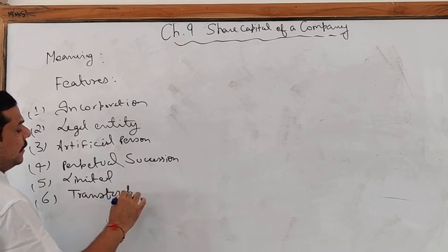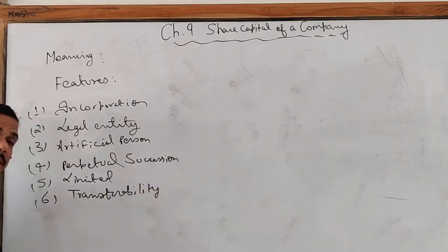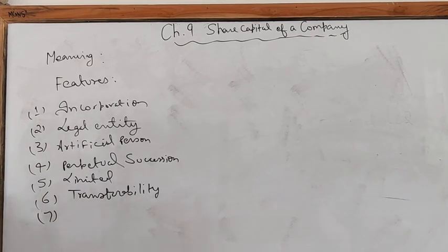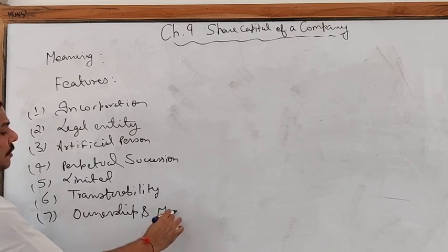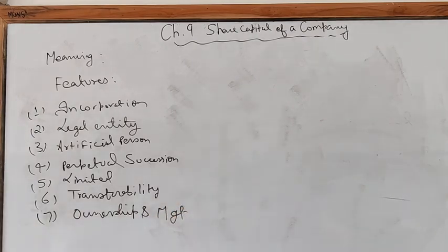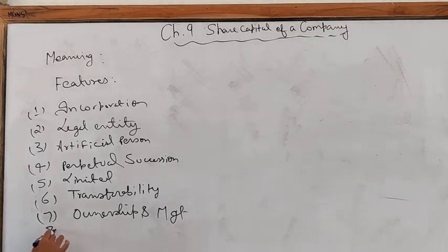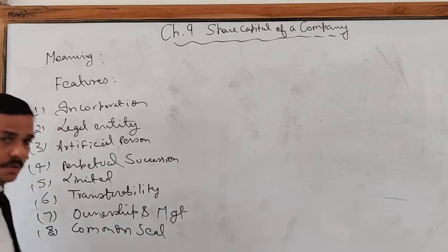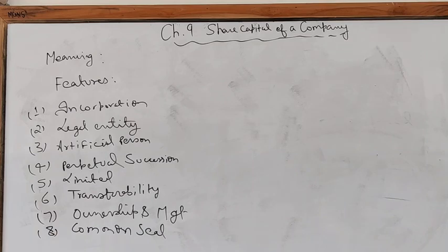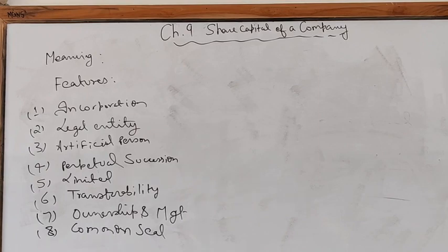Transferability: shares of a public limited company can be easily transferred through the stock exchange. Next is ownership and management — there is a total separation of ownership and management in a company. Owners are the shareholders who reside outside, while management is in the hands of other persons. Every document of the company is supported by a common seal to show its entity. These are some characteristics of a company.